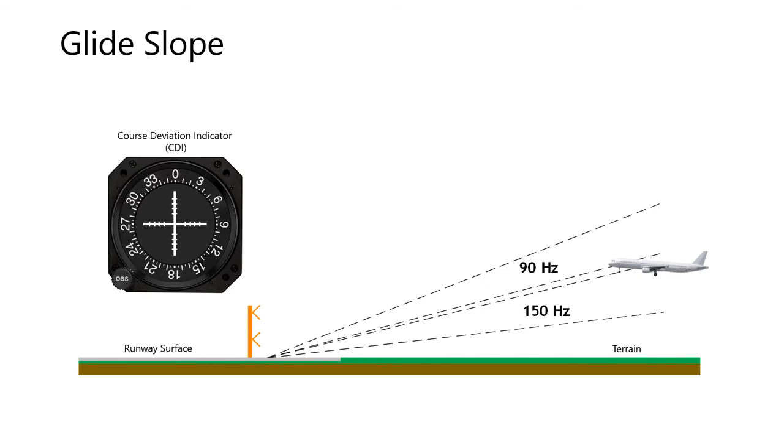In the glide slope, the 90 Hz is the fly-down signal to align the pilot with the proper glide path angle. Conversely, the 150 Hz audio tone tells the pilot to fly up to intercept the glide path. When equal amounts of 90 and 150 Hz audio tone are received, you are properly aligned with the glide path.